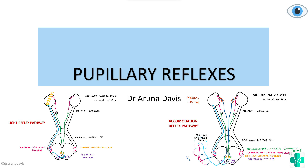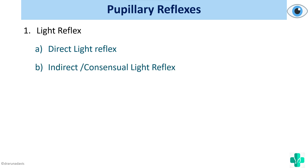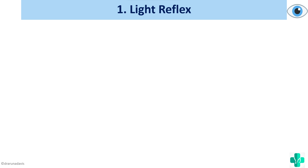In this video we are going to see about the different pupillary reflexes. This question has been asked as a diagram question and as a physiological basis question. By pupillary reflexes we have basically two types: one is the light reflex, which consists of the direct light reflex as well as the indirect or consensual light reflex, and the other is the accommodation reflex or near response.